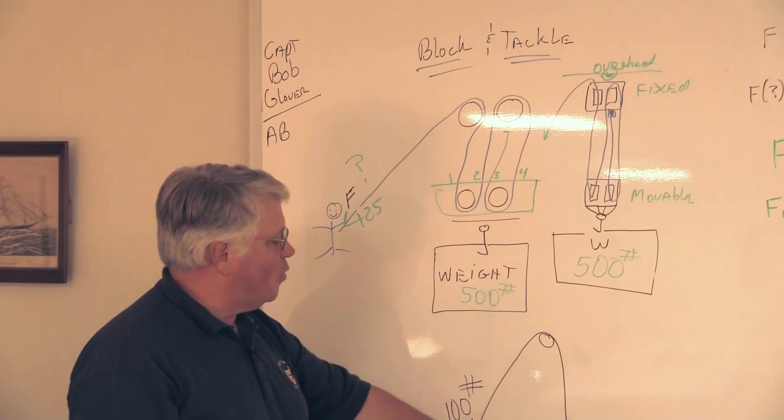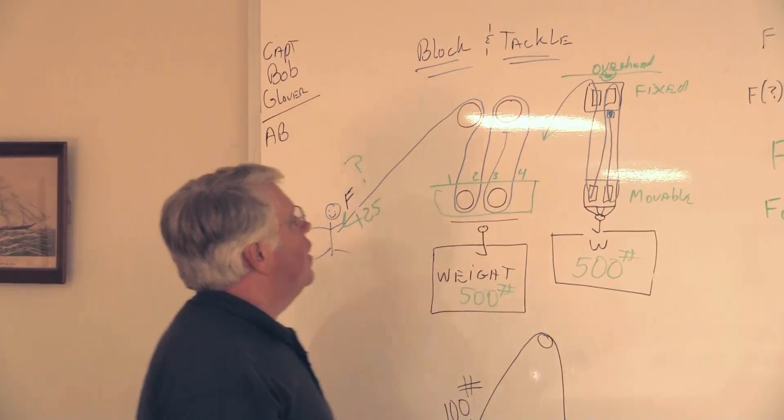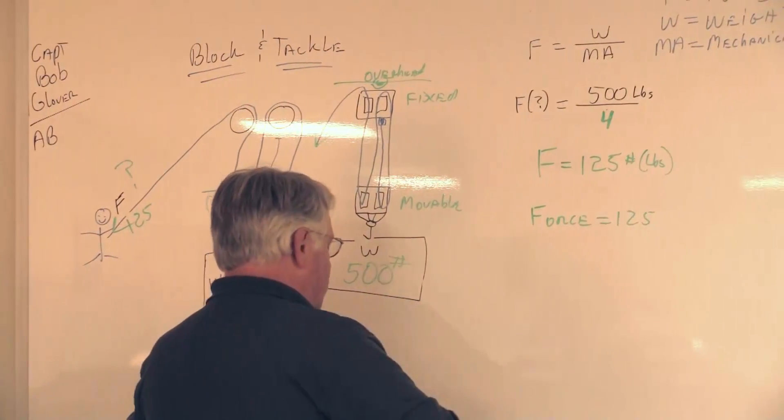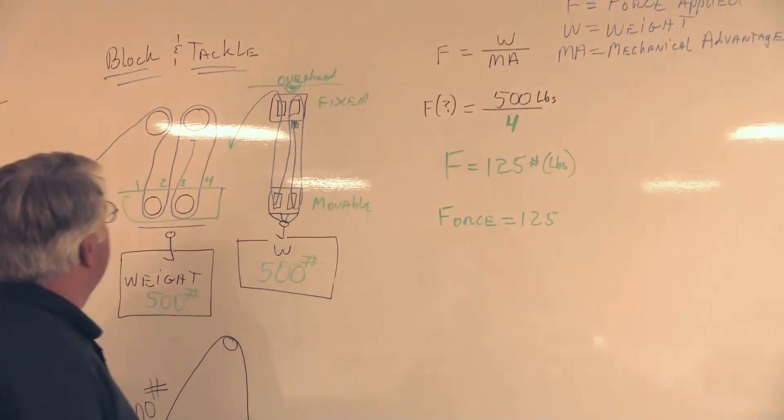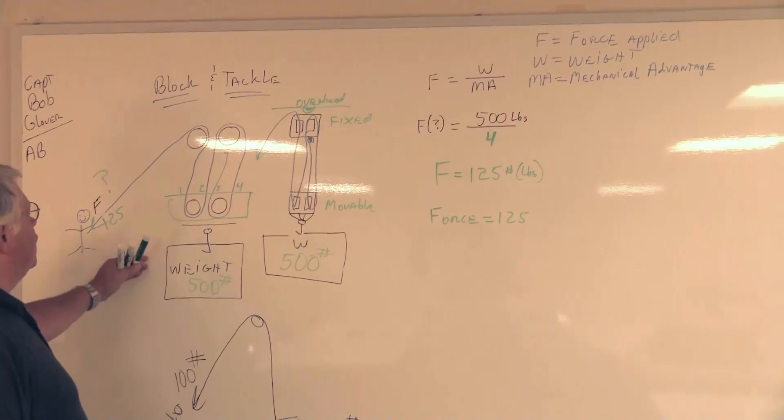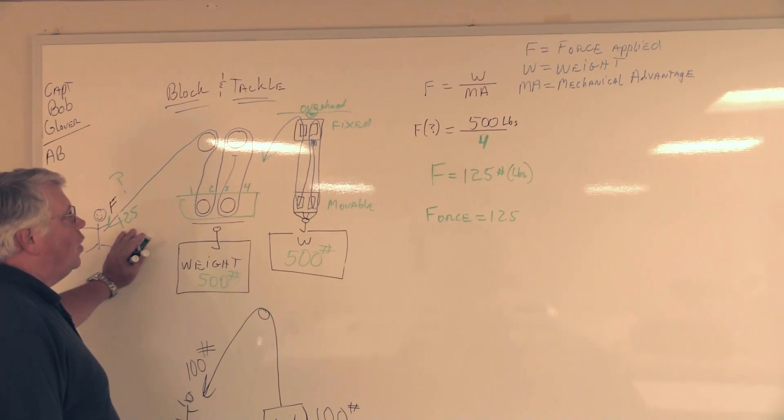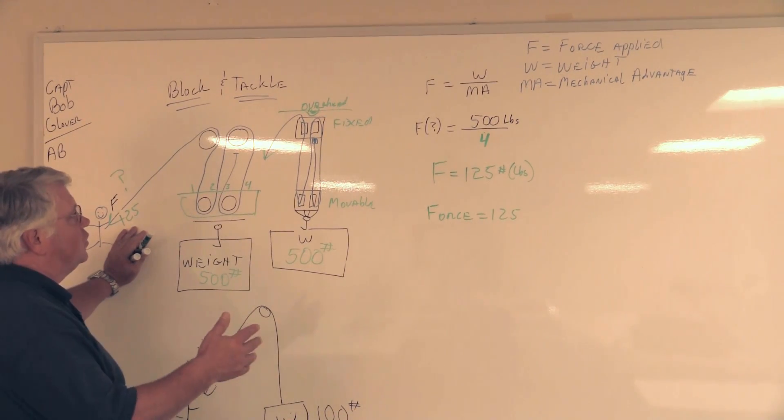Whereas here, because I had no mechanical advantage, it's essentially one-to-one. So that is the system, this is the formula that is fairly generic when it comes to picking up a certain amount of weight and being able to move a very heavy object with not a whole lot of force. This is called force equals weight divided by mechanical advantage.